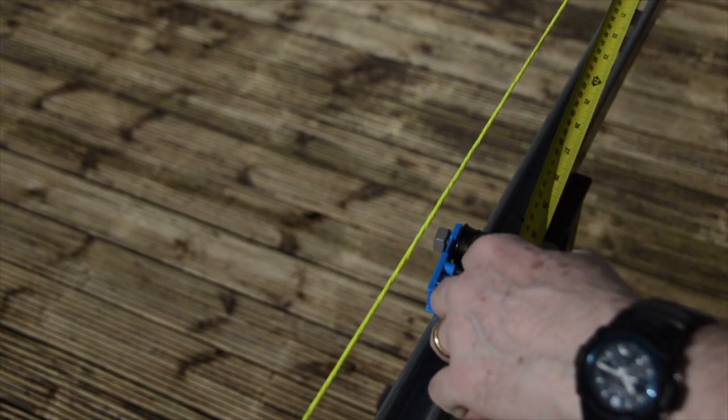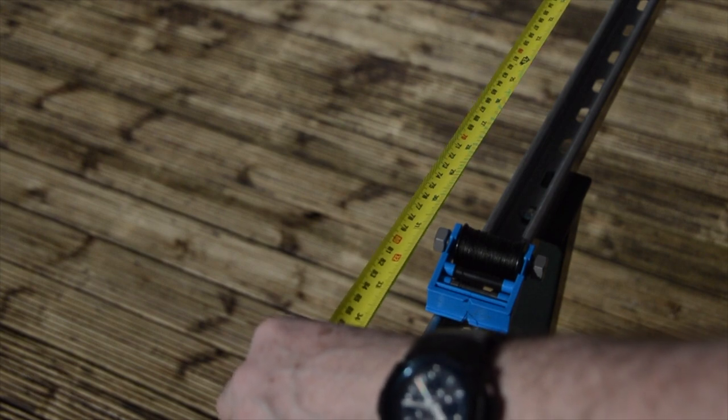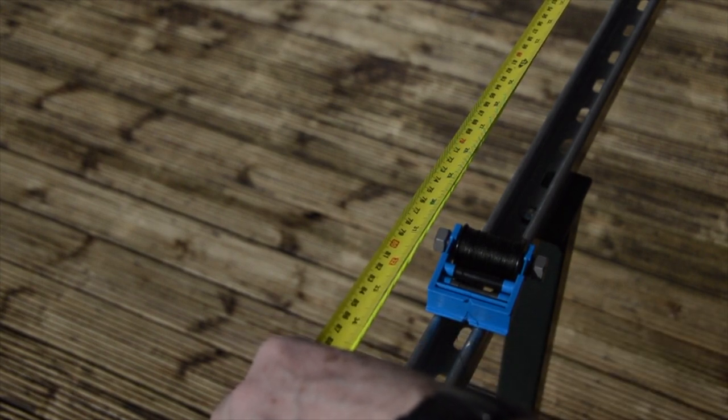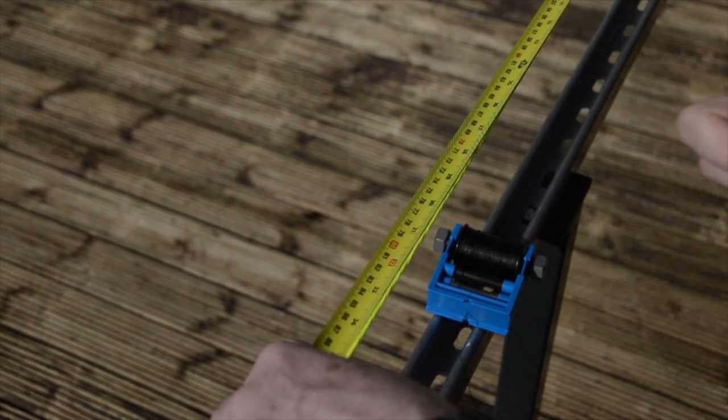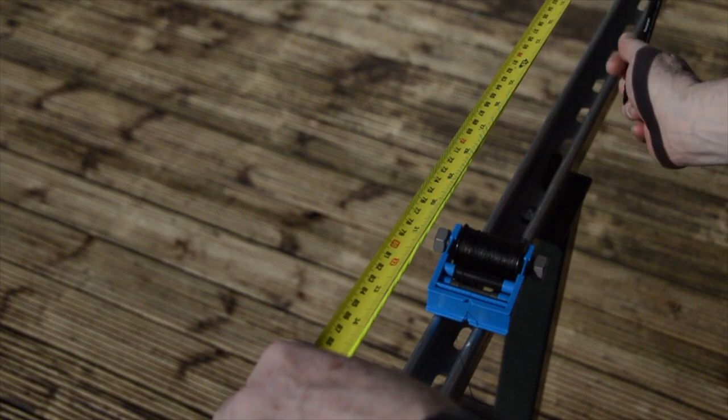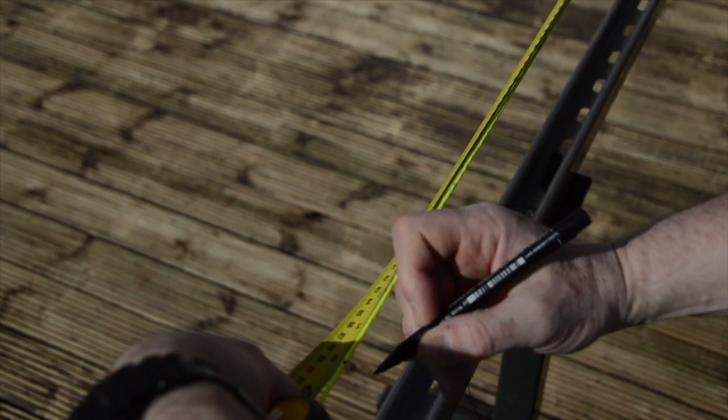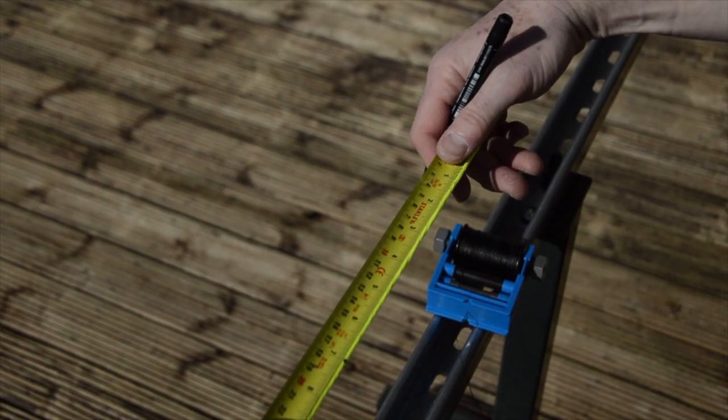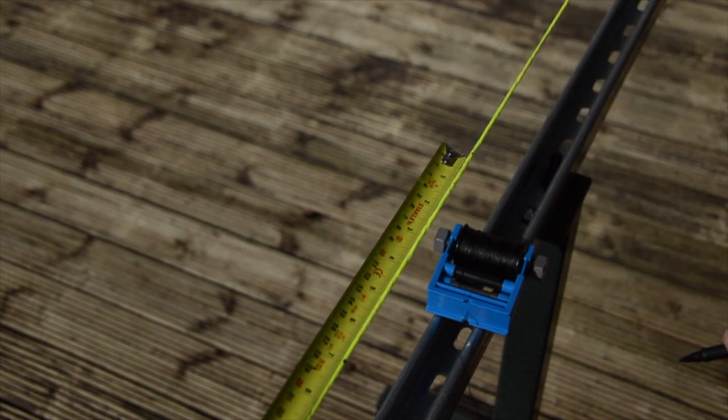This is a 66 inch string and I'm going to measure up from the bottom loop—35 inches—and place a little mark on the string. Then I'm going to measure seven inches back from there and make another mark, and that's going to be our starting point.